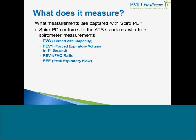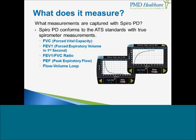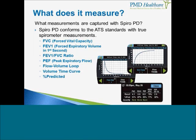It measures PEF, or peak expiratory flow — this is talking about speed, your fastest flow rate. It measures your flow volume loop, which is the speed of air you exhale measured against the amount of air that you exhale, visible in the graph. It also measures your volume time curve — the amount of air you exhale against time. In the third bottom graph, you can see the percent predicted — your spirometry test results compared to other healthy people who are the same age, gender, height, and ethnicity as you are. This is very important because it determines the severity of your condition.